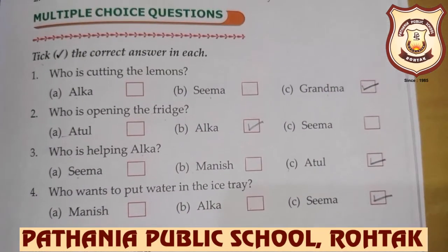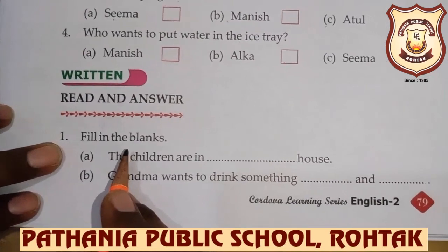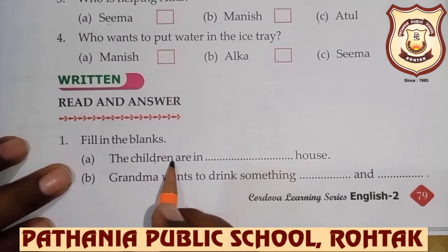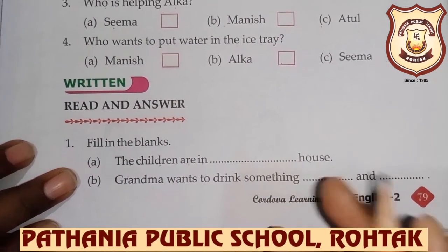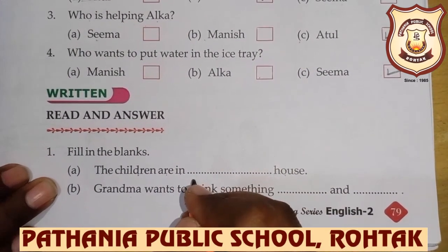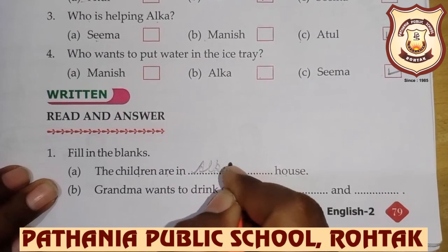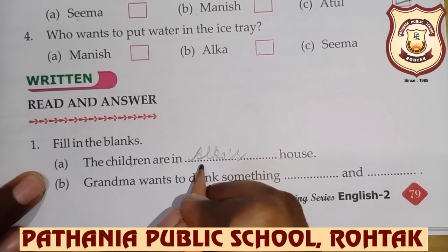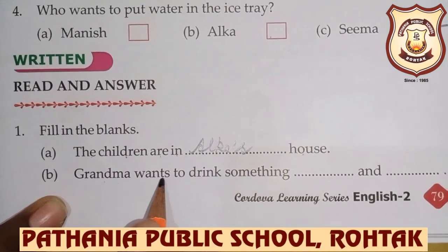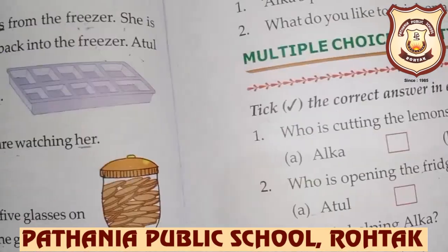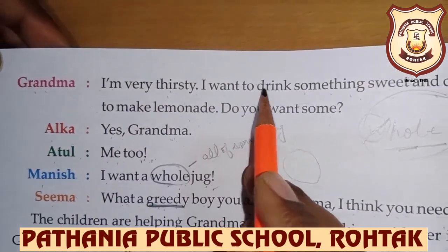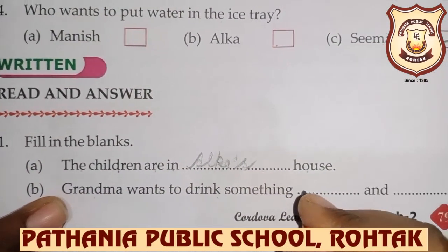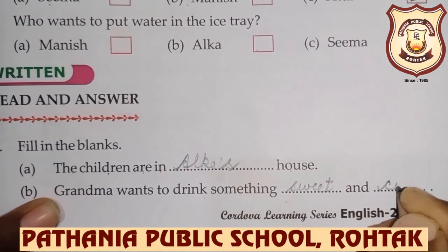This is our question number one, multiple choice question. Now we will do our next fill in the blank question — we had skipped it last time. Filling in the blank: 'The children are in dash house.' Kis ke ghar ae thai sare bachche? Alka's — Alka's with apostrophe S, and Alka will be capital because it is a proper noun, a special name. Next: Grandma wants to drink something dash and dash. Grandma says, 'I am very thirsty, I want to drink something sweet and cold.' So we will write sweet and cold.